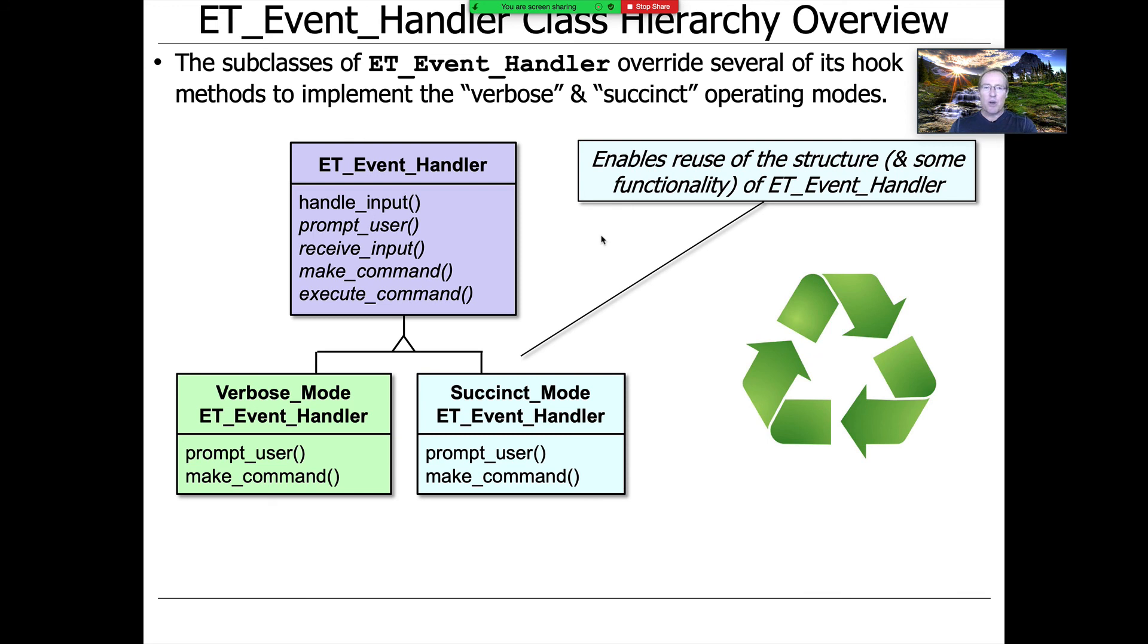This is what we end up with when we're all said and done. We've got this abstract base class. We've got these subclasses or derived classes, and they thereby enhance the reuse of the structure because we've got a common structure. And of course, some of the functionality, the functionality that's defined in the template method, the functionality in the methods that are not changing like execute command or receive input, those things stay the same. And we could also potentially provide default implementations of prompt user and make command and then only have to change them if we need to do something different. I didn't choose to do that in this case, but I could have.